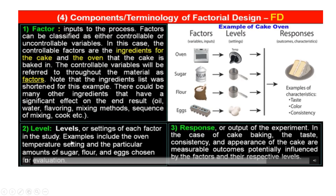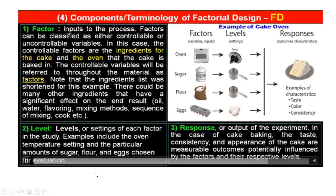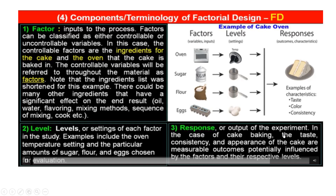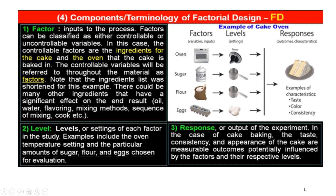Levels are the settings of each factor in the study. In our example, this includes the oven temperature settings and particular amounts of sugar, flour, and eggs chosen for evaluation. Response is the output of the experiment — in the case of cake baking, the taste, consistency, and appearance of the cake are the measurable outcomes potentially influenced by the factors and their respective levels.